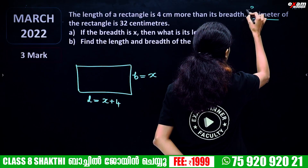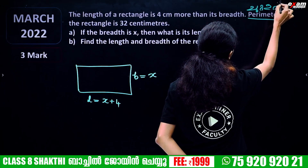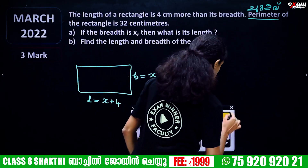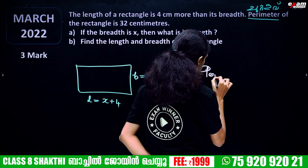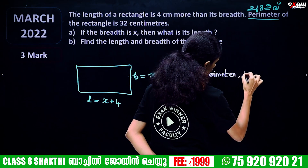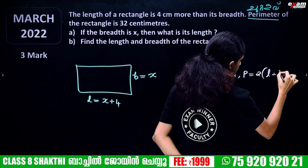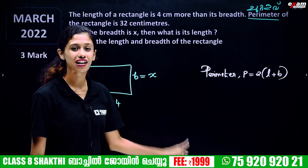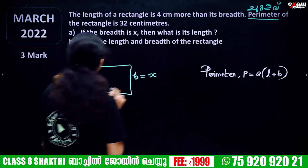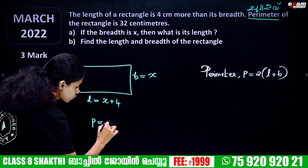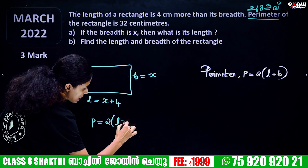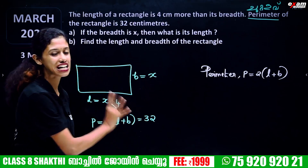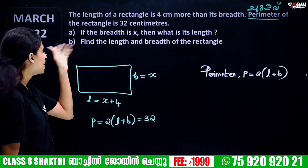Now, the perimeter is 32 cm. Perimeter P is equal to 2 into length plus breadth. So we get P is equal to 2 into length plus breadth, equal to 32.